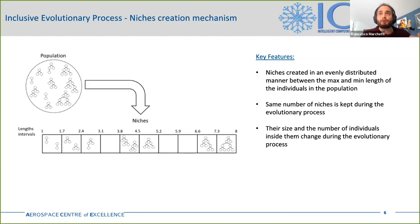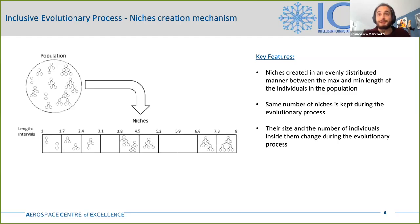During the evolutionary process, the number of niches is kept constant, but the individuals inside them and the length span that they cover changes. Already without considering the reproduction and selection, this creates a flow of genes between niches, since their variation of size allows for the shifting of individuals between contiguous niches.